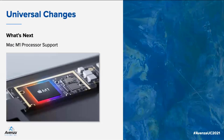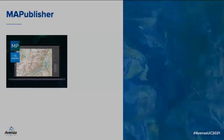You can run Map Publisher and Geographic Imager on Apple devices using the new M1 processor in Rosetta mode. Full native support for the M1 processor will be coming later this year, as full support will only be available after required updates to some of our externally developed libraries are released.